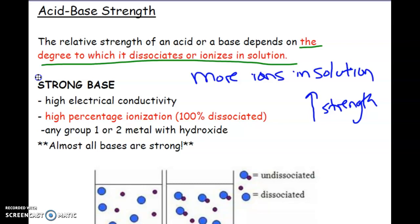Strong bases we'll look at first, because there's more strong bases than there are weak bases. This should make sense now that you understand what makes up something that's strong. Strong bases have high electrical conductivity. Well of course, because there's lots of ions there. It has a high percentage of ionization. In other words, it is 100% dissociated. Technically it's anything that's 99% and up. We almost assume that it's going to be all the way dissociated.